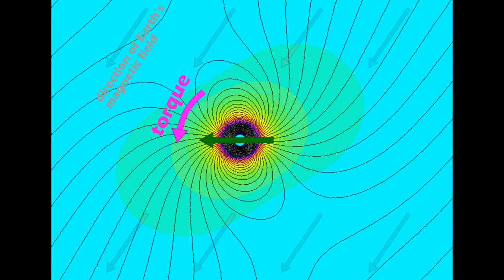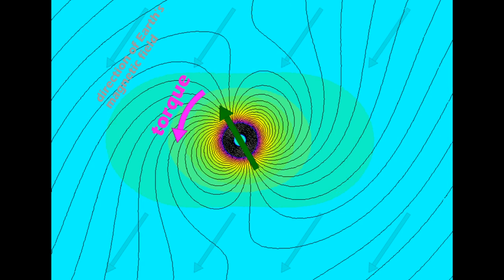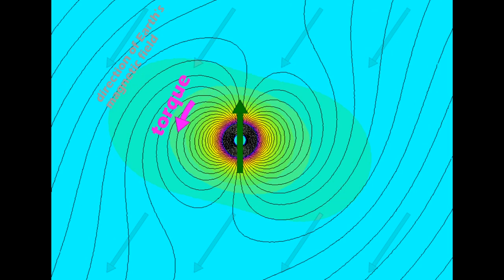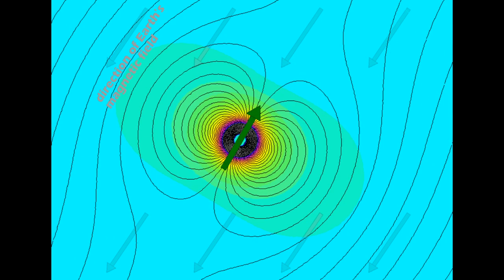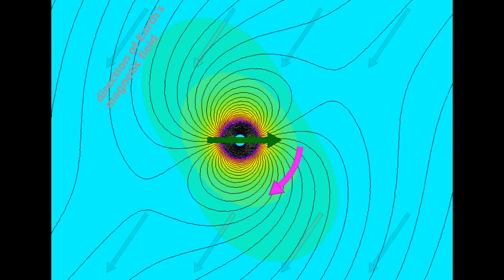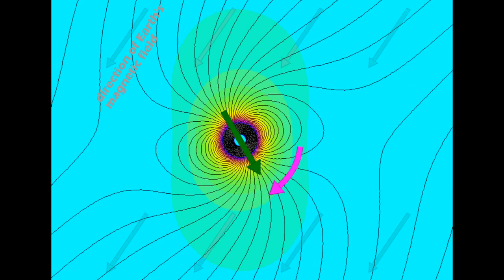As the magnet rolls along, it feels a torque, represented by the pink arrow, that tries to align it with pointing down at that same angle. It's such a weak force, so the magnet doesn't snap to it, but it does speed up and slow down a little bit.